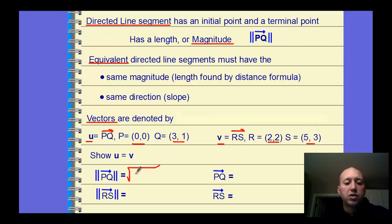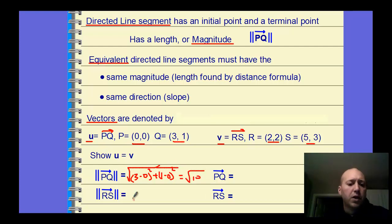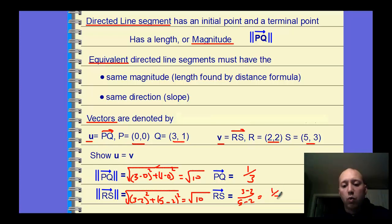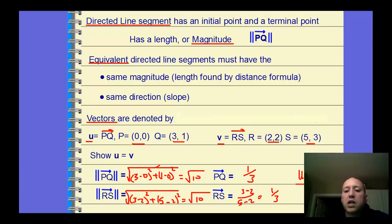If we want to see if these initial and terminals are the same, we first find the magnitude using the distance formula. That's 3 minus 0 squared plus 1 minus 0 squared, square root that, and you get the square root of 10. We do the same thing for RS: 3 minus 2 squared plus 5 minus 2 squared, and we get the square root of 10 again. Now we look at the slopes: PQ gives 1 minus 0 over 3 minus 0, which is 1/3. And RS gives 3 minus 2 over 5 minus 2, which is also 1/3. Therefore, U equals V because they have the same length and the same direction — they're equivalent directed line segments.